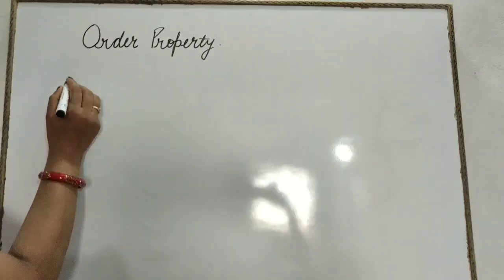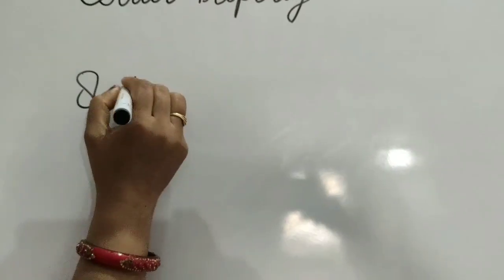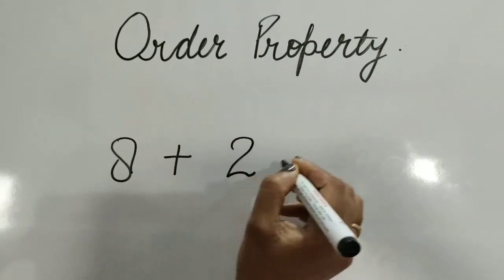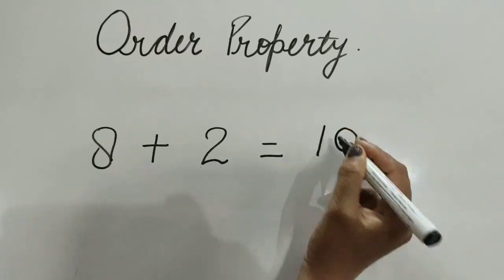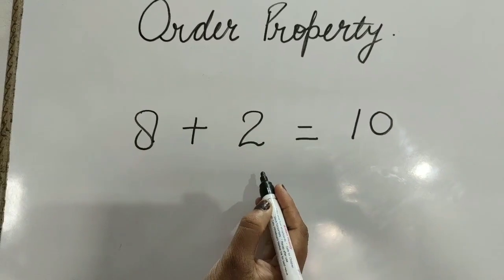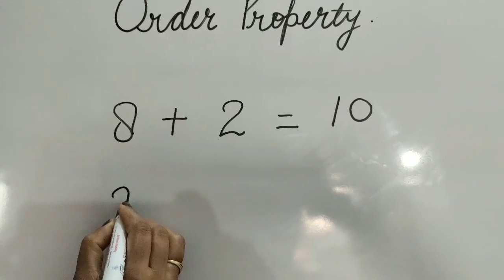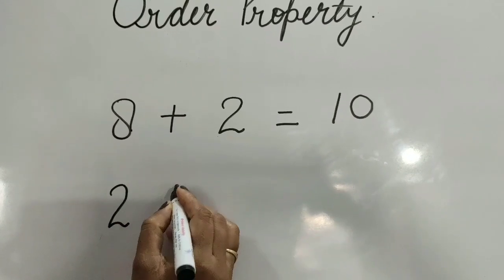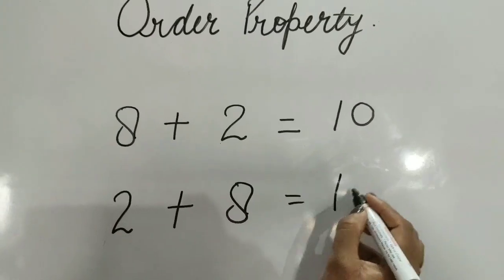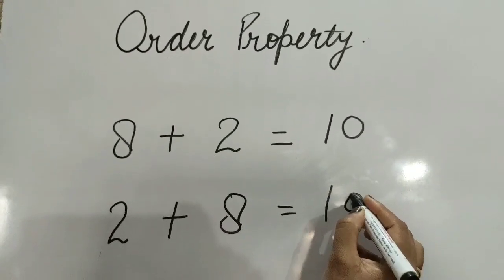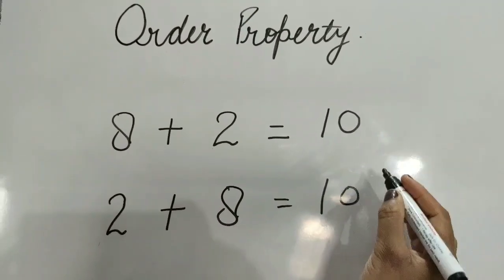8 plus 2 is equal to 10. We change the order of numbers. 2 plus 8 is equal to 10. Both sums are equal.